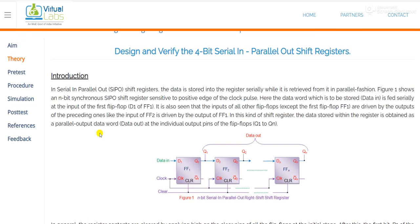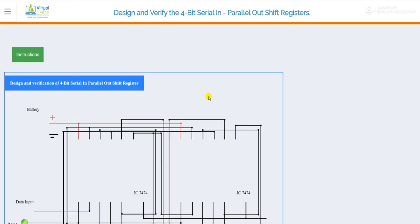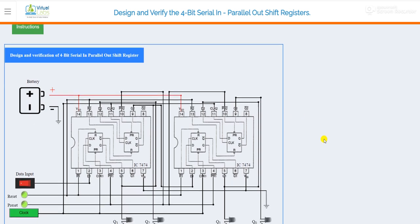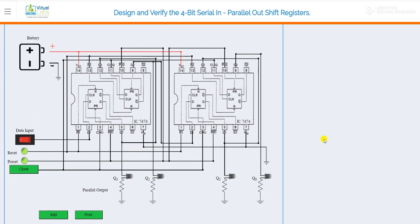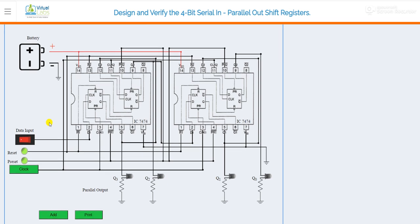Why are we calling it four-bit? Because we are using four flip-flops in the simulation part. So just click on the simulation. This is basically the circuit of the shift register. We are using the 7474 IC, which basically belongs to the D flip-flop family.